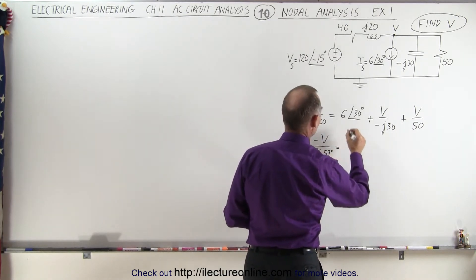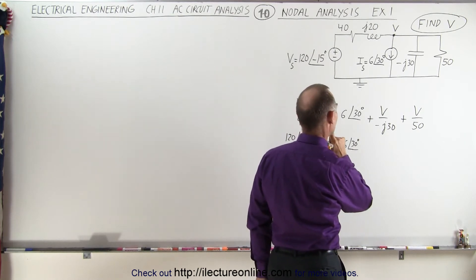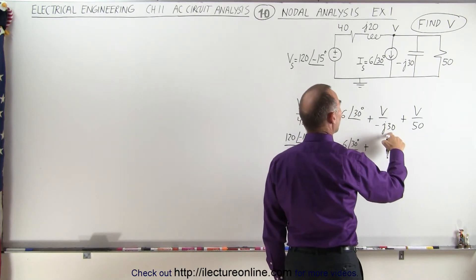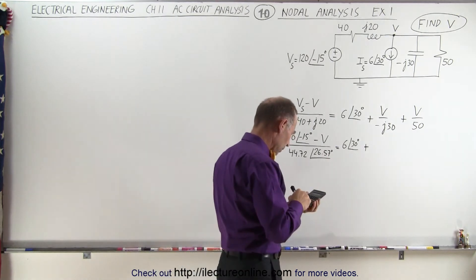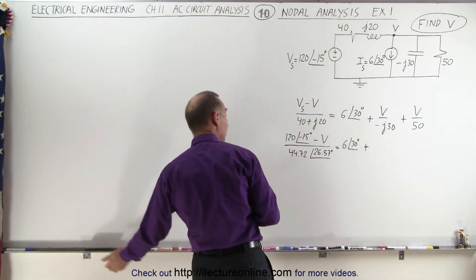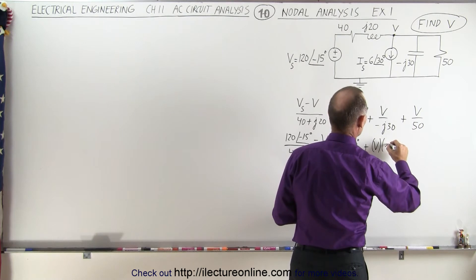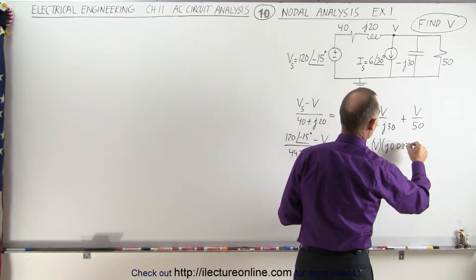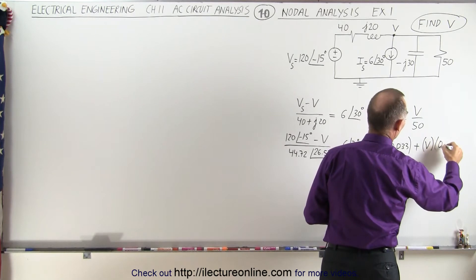On the right side, we already have this as 6 with a phase angle of 30 degrees. What we're going to do is bring the denominator to the numerator. So minus J30 in the denominator becomes a plus J, and 1 divided by 30 is 0.0333. The minus J becomes a plus J up here, so we have V multiplied times J times 0.033, and then plus V multiplied times 0.02.